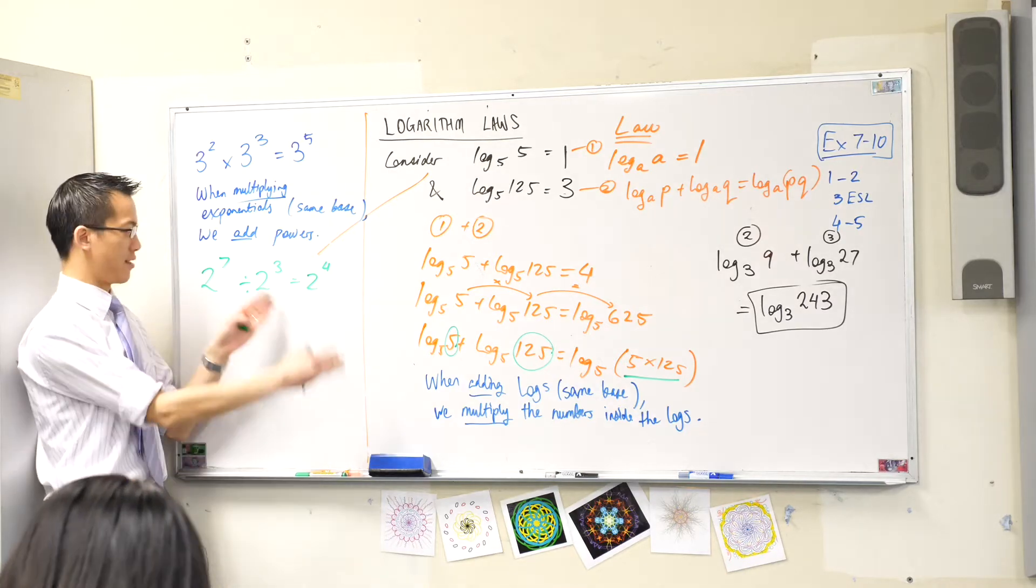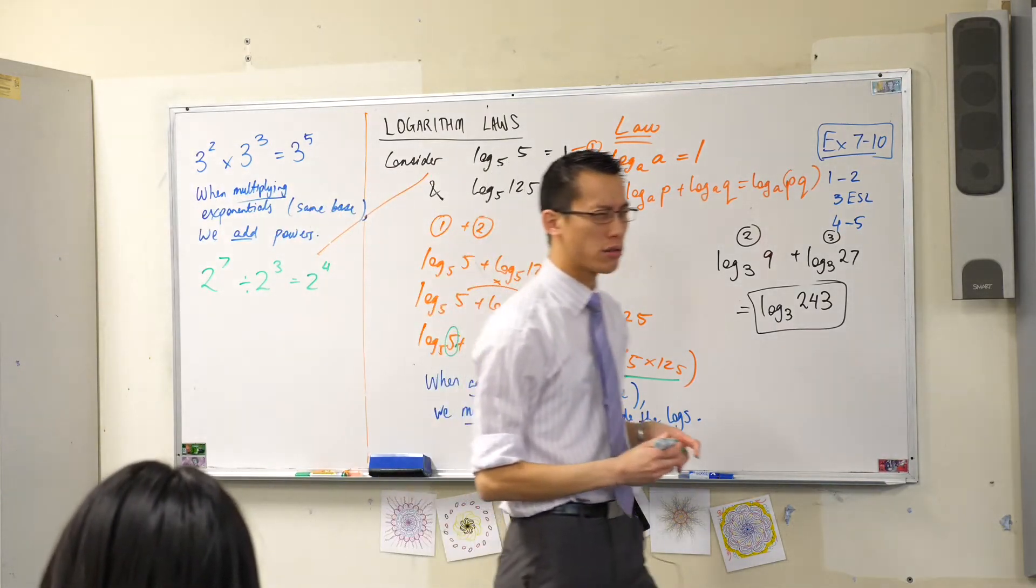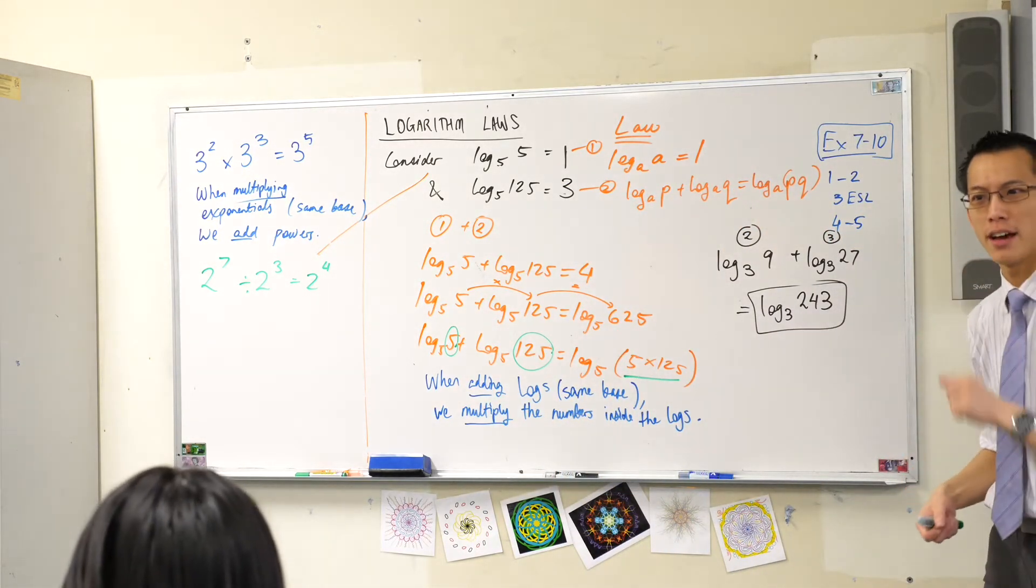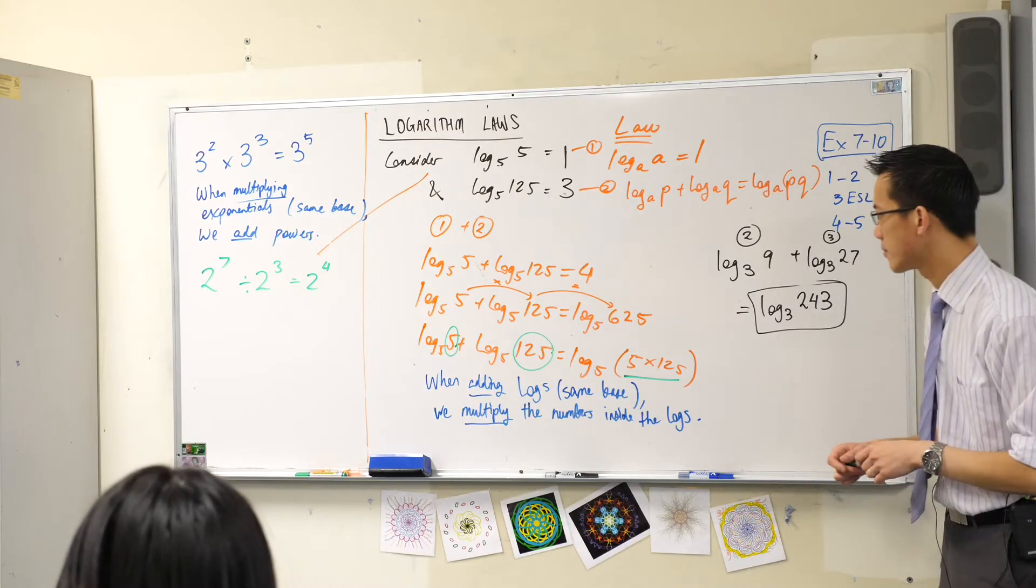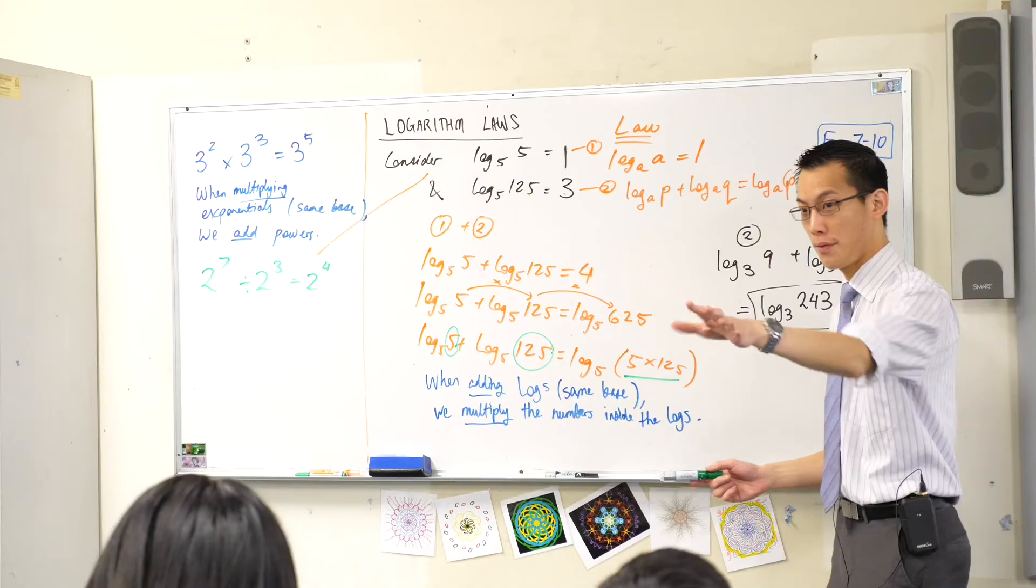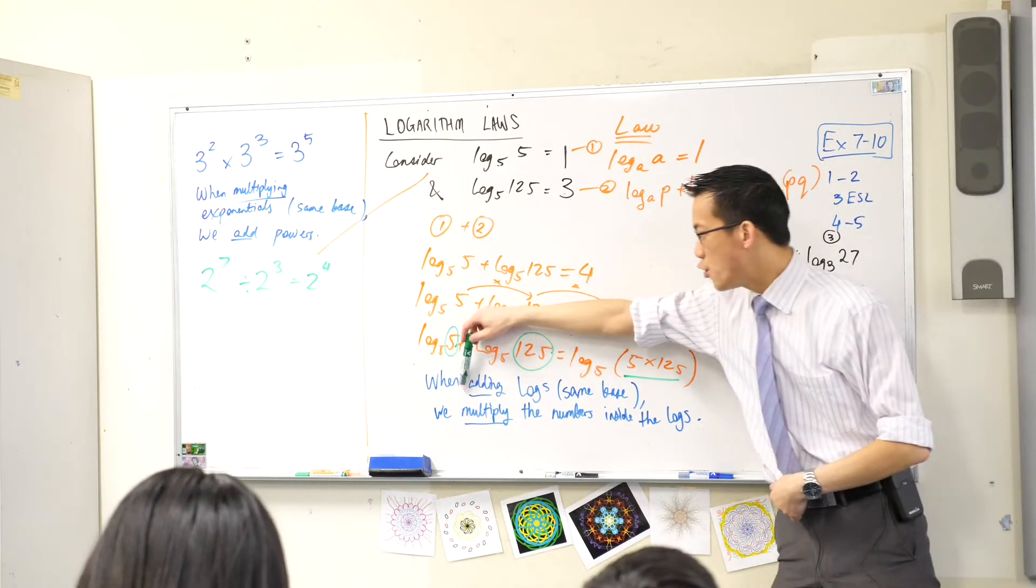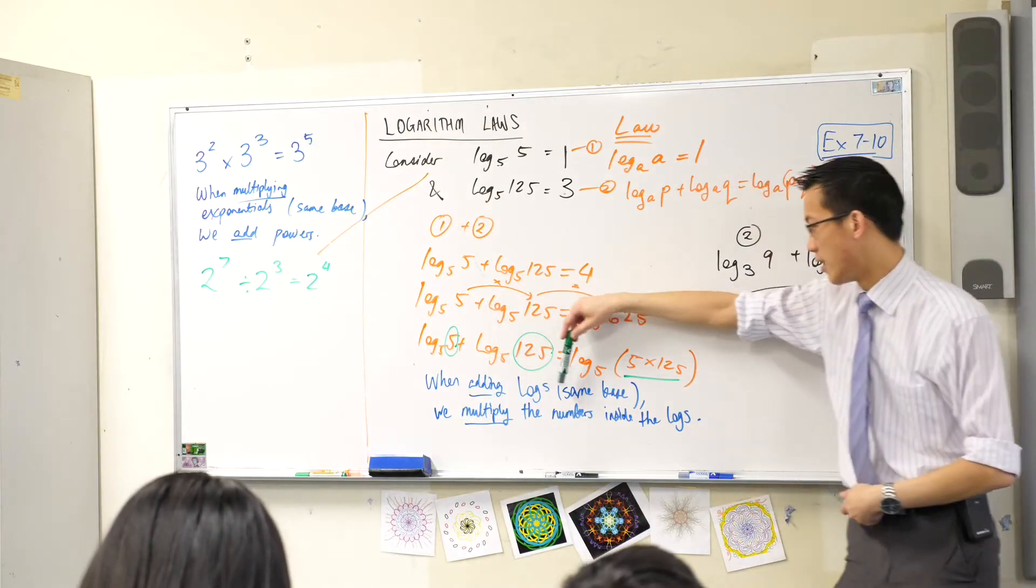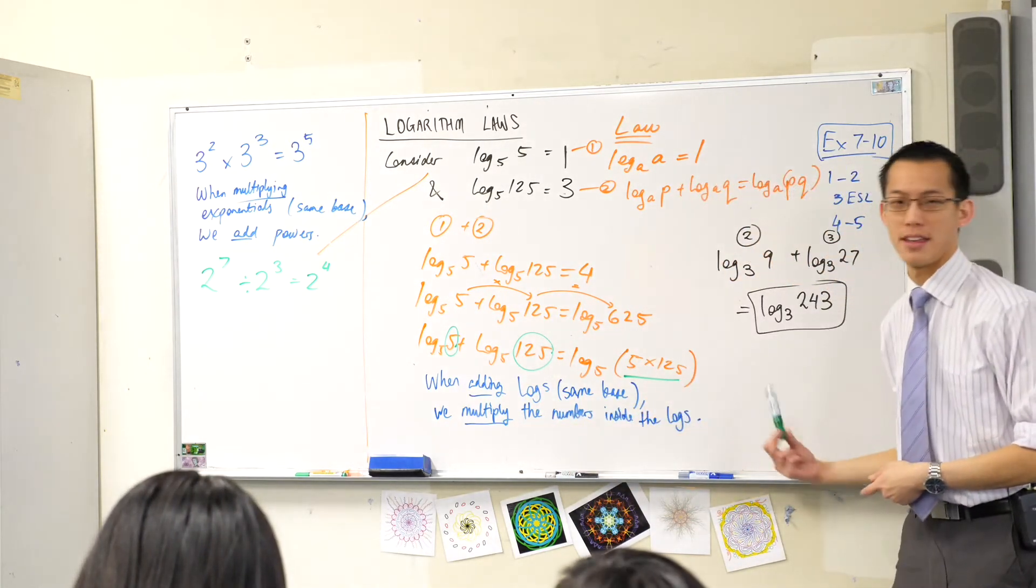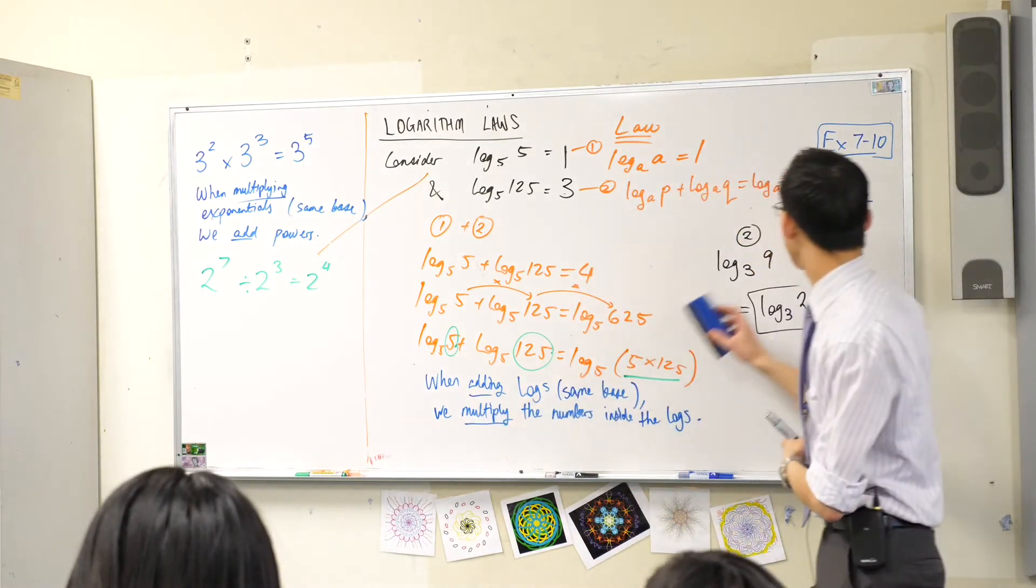Say that again. Dividing exponentials turns into subtraction. So what kind of log law do you think would go with that, being that we're sort of reversing everything? Yeah? Very good. In case you didn't catch that. It's just like this but in reverse. If you are subtracting logs with the same base, then we divide the numbers inside the logs, okay? So what would that look like? I need a bit more space here.